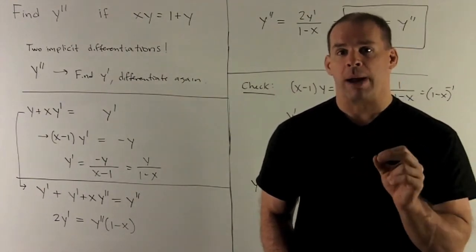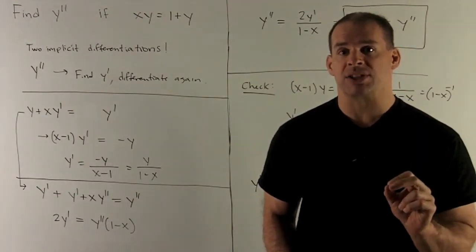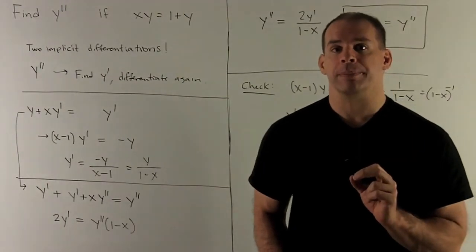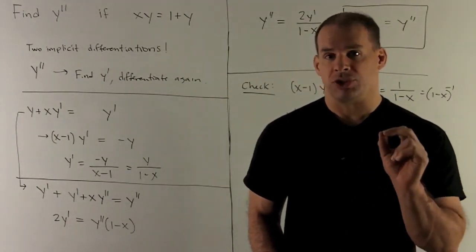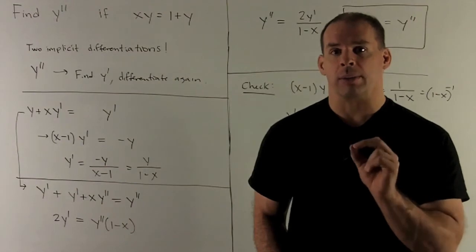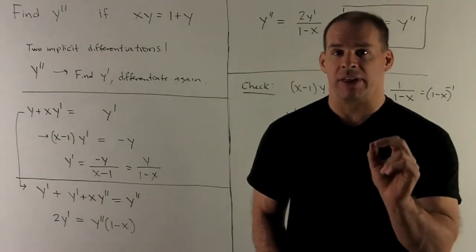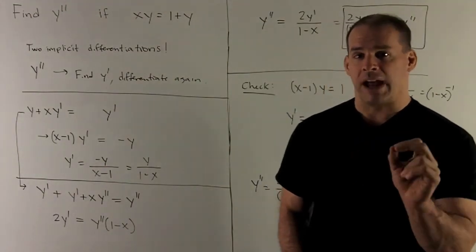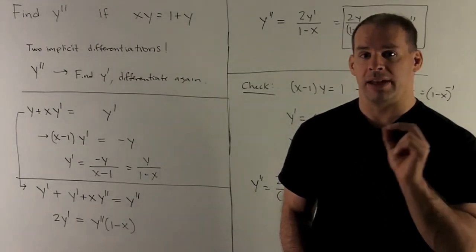On the other side, we have y prime, derivative with respect to x, y double prime again. Now I just do our same trick. We collect all the y double primes on one side, everything else on the other side, factor out y double prime, and then divide.